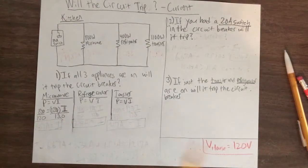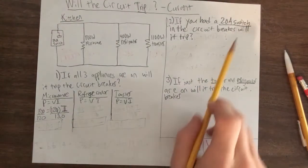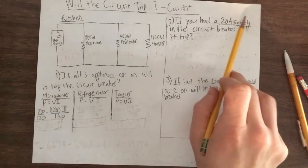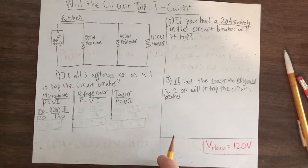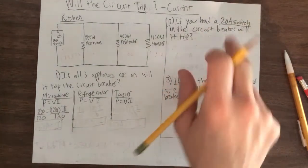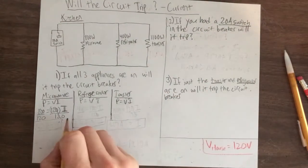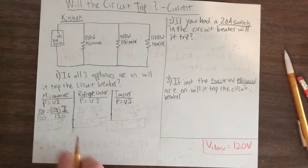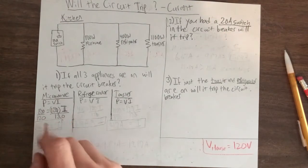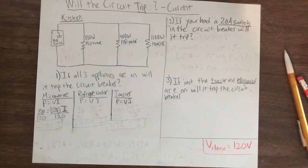When I went and got my calculator to do this calculation, I actually went and changed question number two to a better question. So just be aware of that — if you copied that down, just recopy it differently. So anyway, we're going to divide 800 by 120.